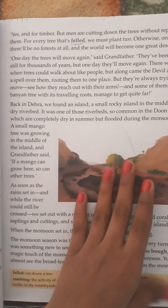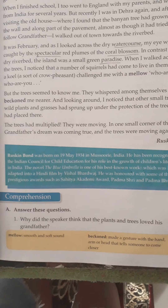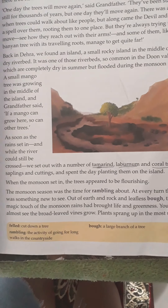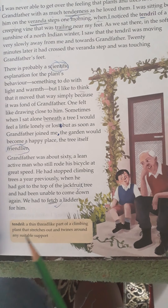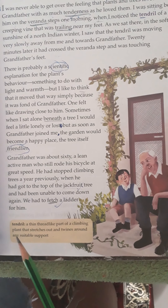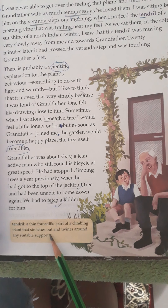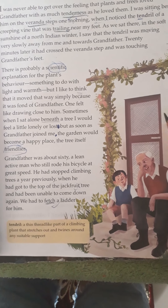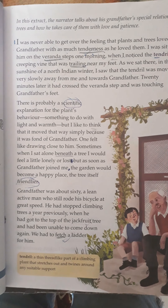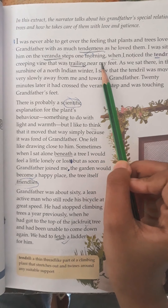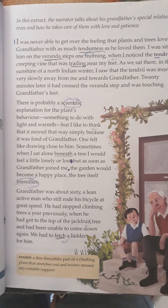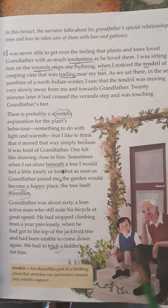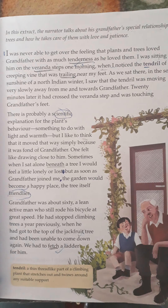Tendril — here you can see the tendril. Its meaning: a tendril is a thin, thread-like part of a climbing plant that stretches out and twines around any suitable support. So, the creeping vine was trailing near my feet — you can see this creeping vine here in the image.